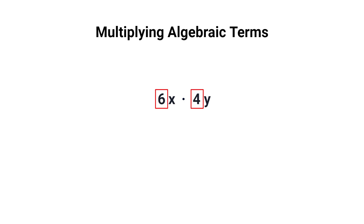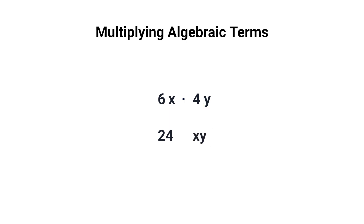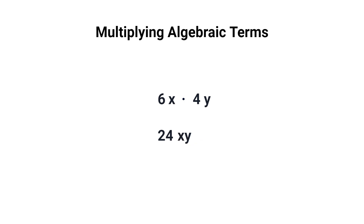Let's first multiply 6 by 4: 6 multiplied by 4 equals 24. Now let's multiply the variables x and y. Since we're multiplying two unknown values, we can remove the multiplication symbol and simply place both variables next to each other. The number 24 is being multiplied by the variables x and y, so we can simply write 24 next to xy. Therefore, 6x multiplied by 4y equals 24xy.